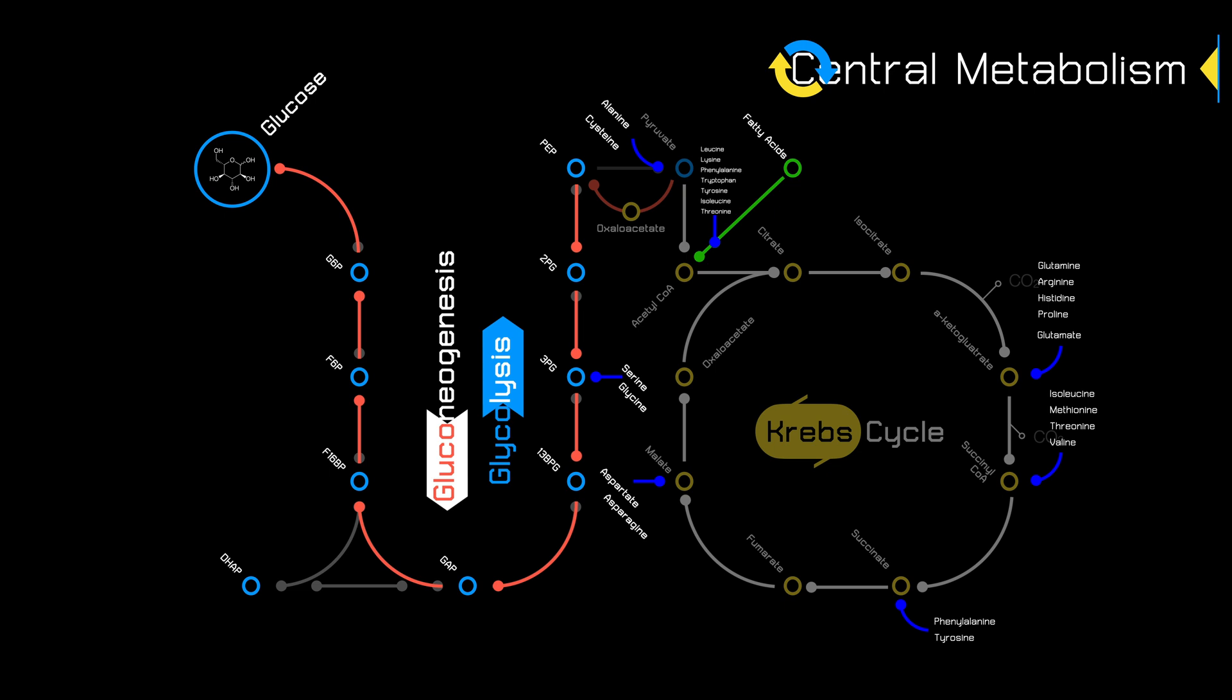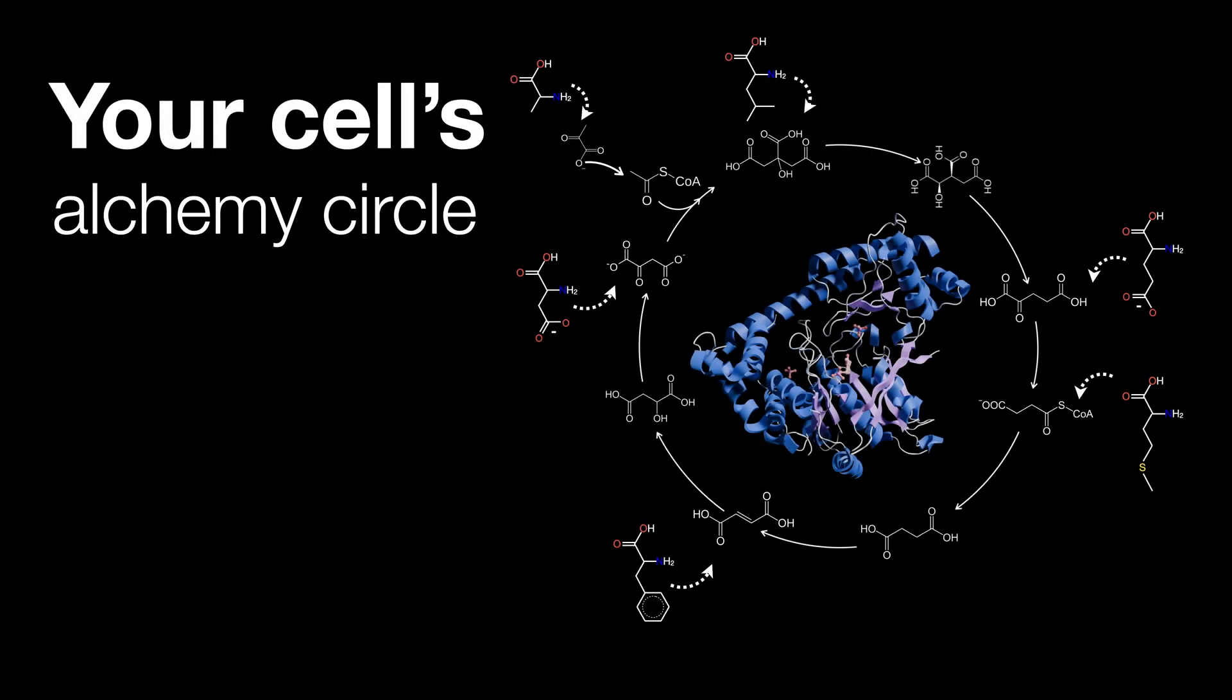This is why you are taught glucose metabolism first. It covers the pathways that are at the center of all metabolism. This is why it's called central metabolism. This is your cell as an alchemist and at its center is the Krebs cycle.